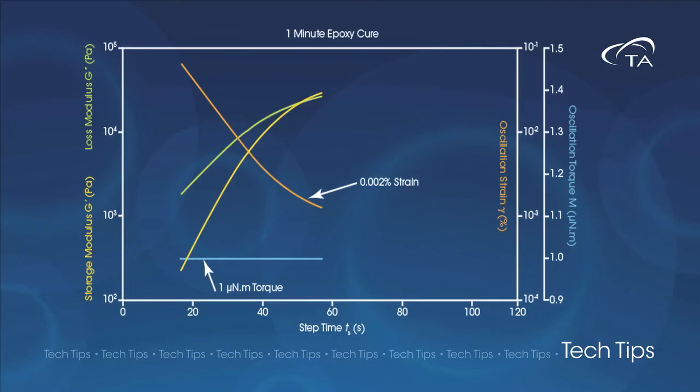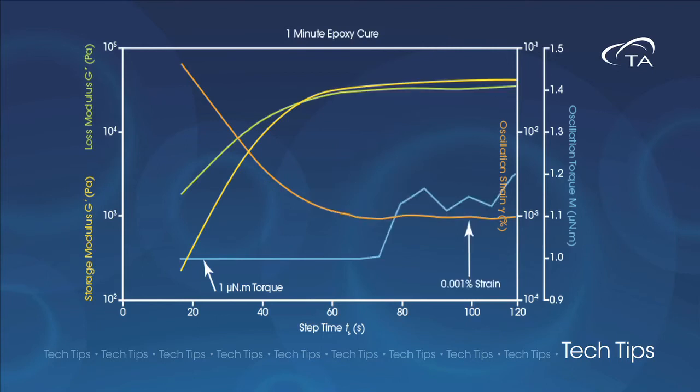As the sample becomes stiffer, a smaller strain can be used to achieve the minimum torque. The strain amplitude is incrementally decreased to the value we set in the procedure.